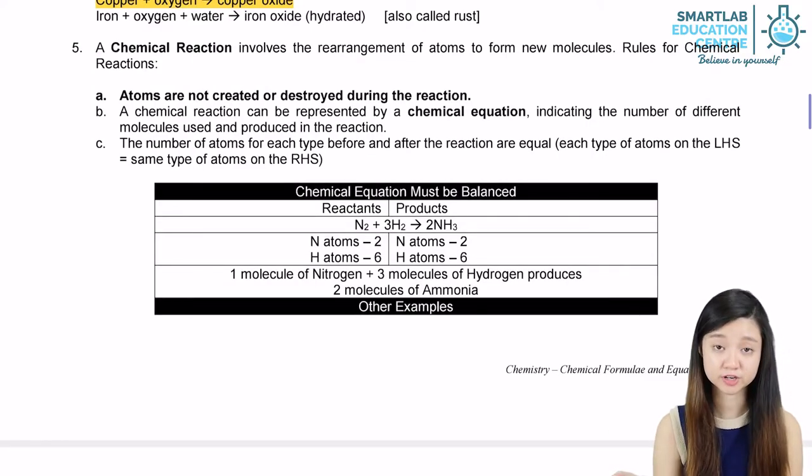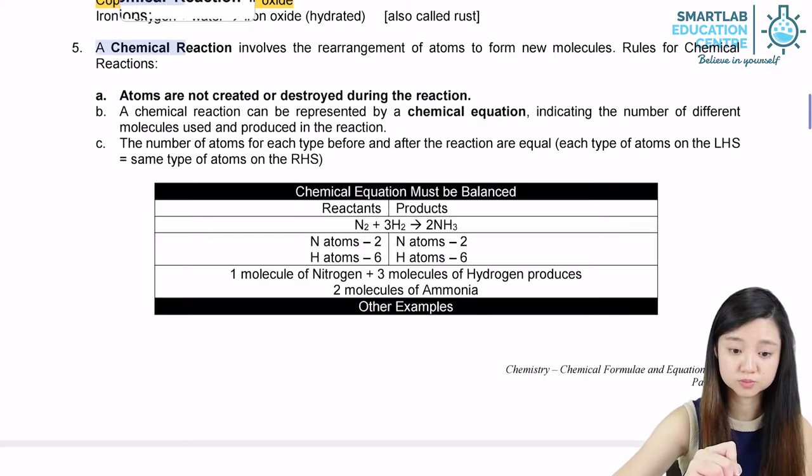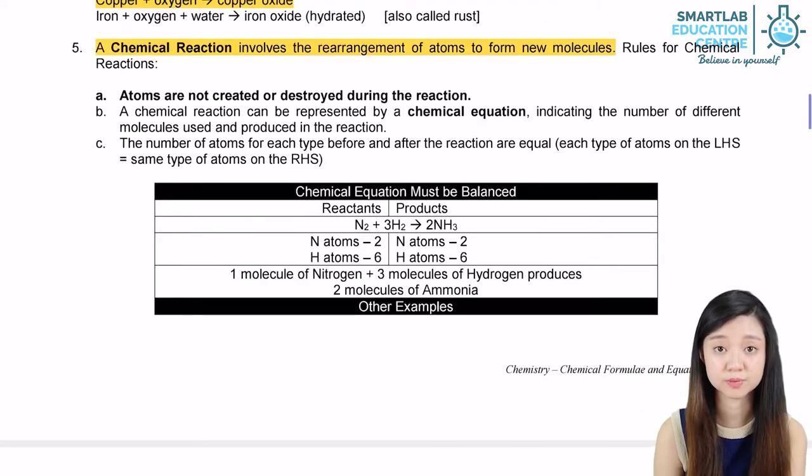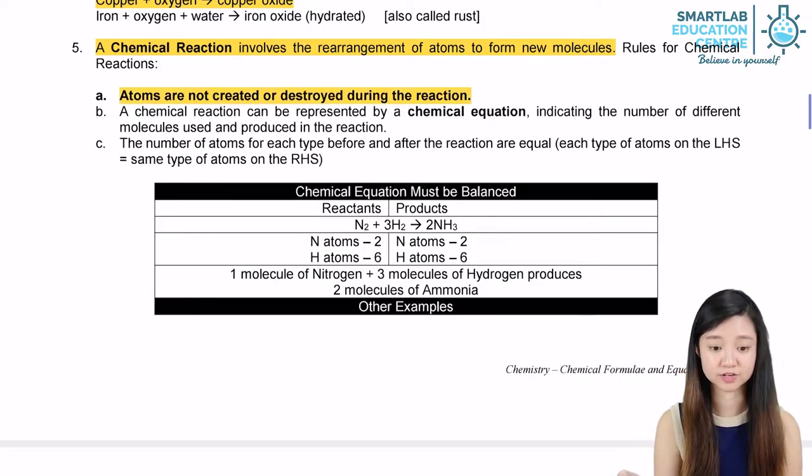So a chemical reaction, as we have seen above, involves the rearrangement of atoms to form new molecules. There's actually certain rules that we have to follow for chemical reactions. The first one: atoms are not created or destroyed during the reaction.